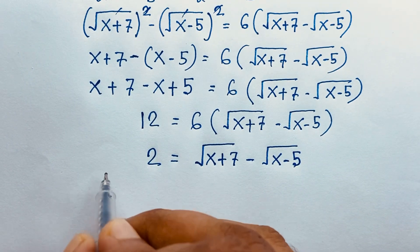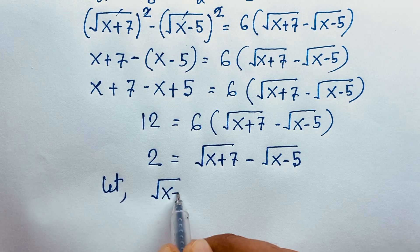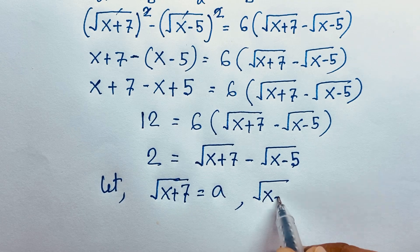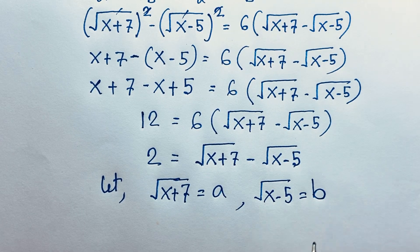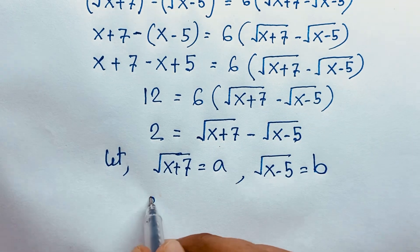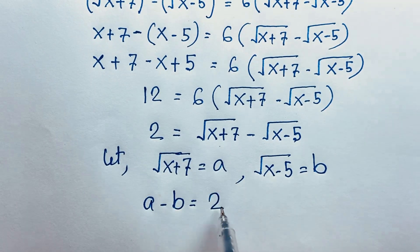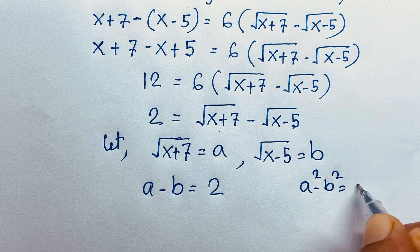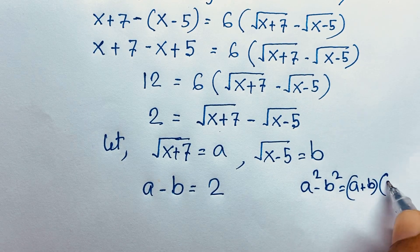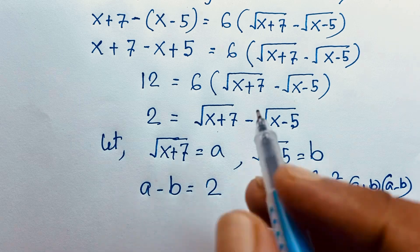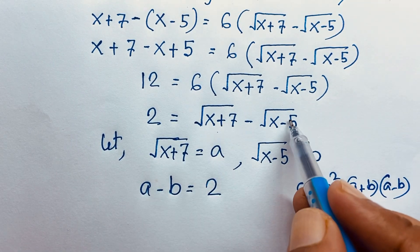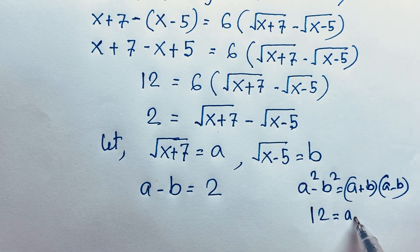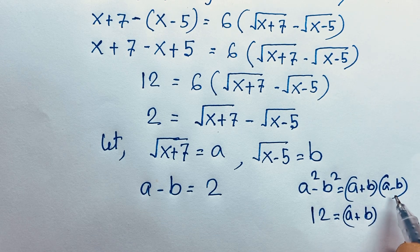Now, let √(x+7) equal a and √(x−5) equal b. Equivalently, a minus b is equal to 2. We know that a squared minus b squared equals (a plus b) times (a minus b). The a squared minus b squared here equals 12. So I take 12 here, and a plus b — I don't know what a plus b equals. But we know that a minus b equals 2.